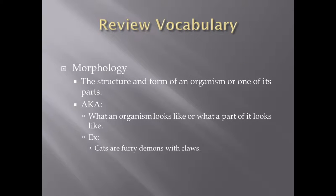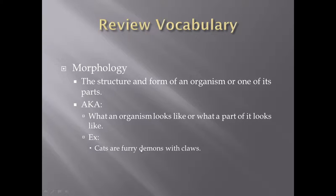Before I start, I want to review a key term that is important to understand this, and that is the idea of morphology. Morphology is defined as the structure and form of an organism and one of its parts. What that means is it's basically what an organism looks like or what parts it has. For my little example, cats are furry demons with claws. The two morphological parts would be furry, because cats have fur, and claws, because cats have claws. The demons part is my little add-on — they're not really demons, but I think they are.